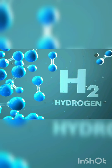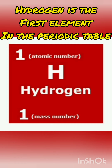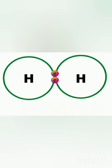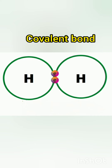Today we will be starting a new chapter: Hydrogen. Hydrogen is the first element in the periodic table. Its atomic number is 1 and mass number is also 1. Hydrogen has only one electron. The picture on the screen shows the orbital structure of hydrogen. Hydrogen always exists in the diatomic state — two hydrogen atoms combine to form a molecule of hydrogen, which is why we write H2. The two atoms of hydrogen share electrons by means of a covalent bond.